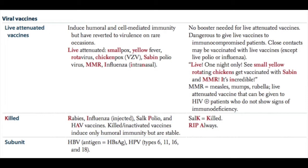Live attenuated vaccines include smallpox, yellow fever, chickenpox (varicella zoster virus), Sabin's polio virus, and MMR. You can remember this with the mnemonic: 'Live one night only — see small yellow chickens get vaccinated with Sabin's and MMR.' MMR equals measles, mumps, and rubella. It is the only live attenuated vaccine that can be given to HIV-positive patients, which is important to know.